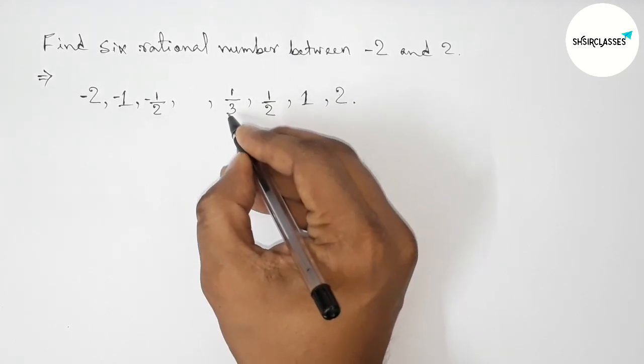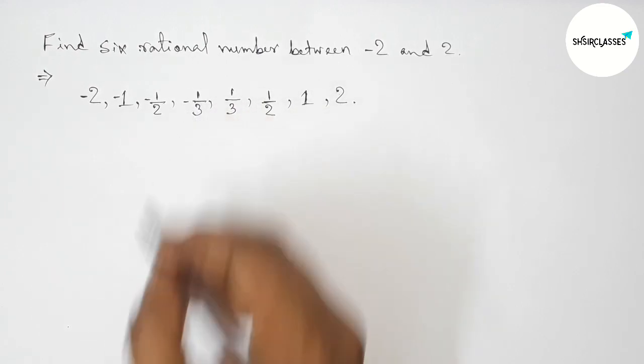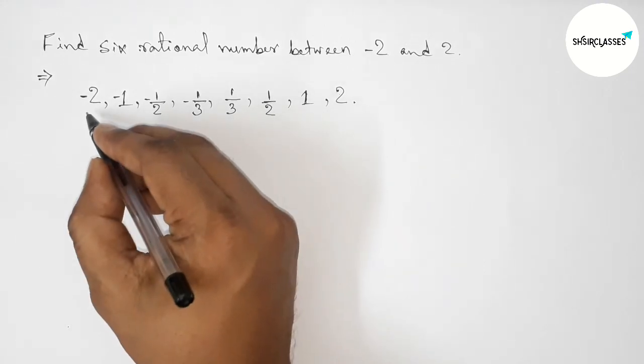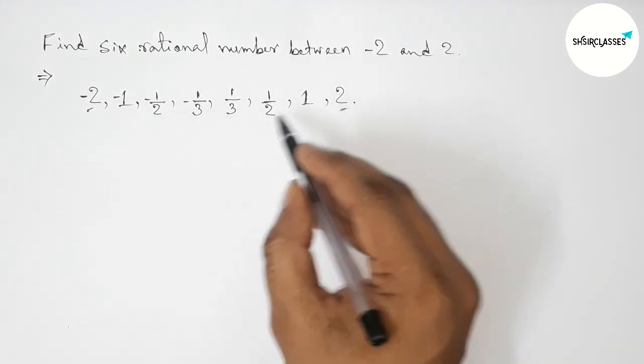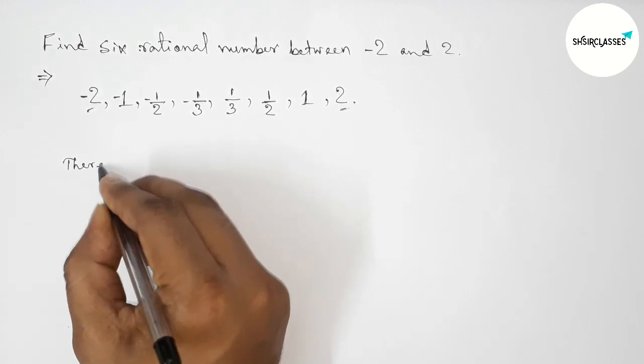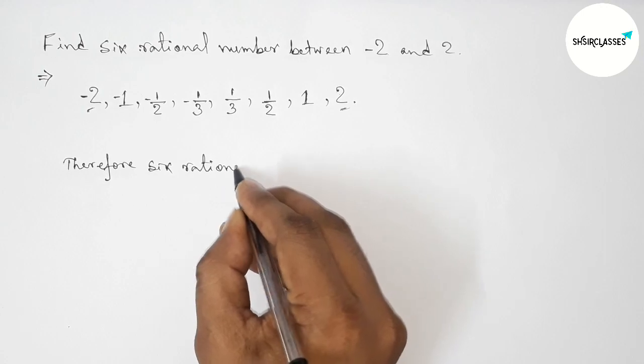Now taking here one by three and here minus one by third. Okay, you can take another six rational numbers but here taking these. These are six required rational numbers between minus two and two, so therefore the required...